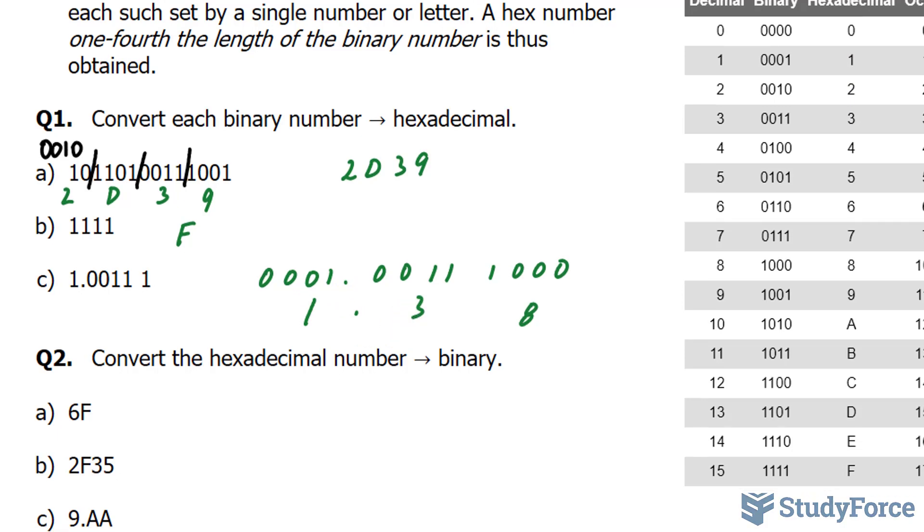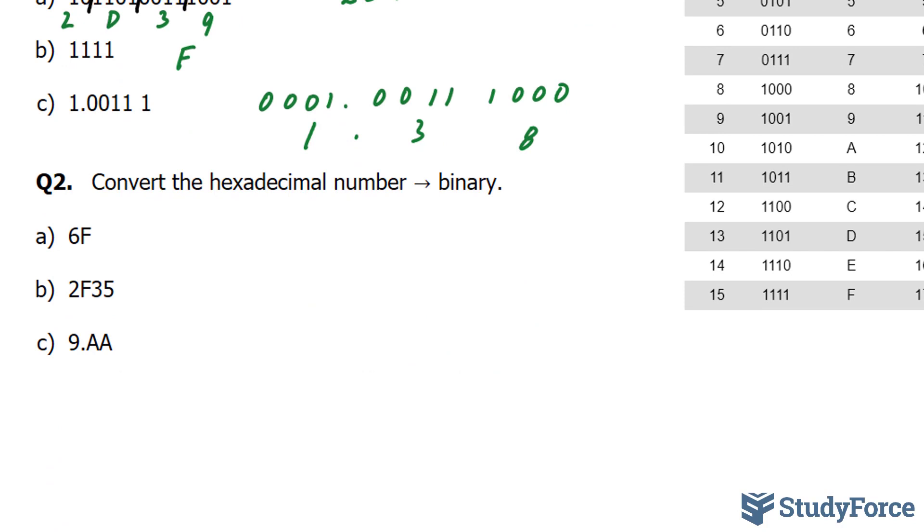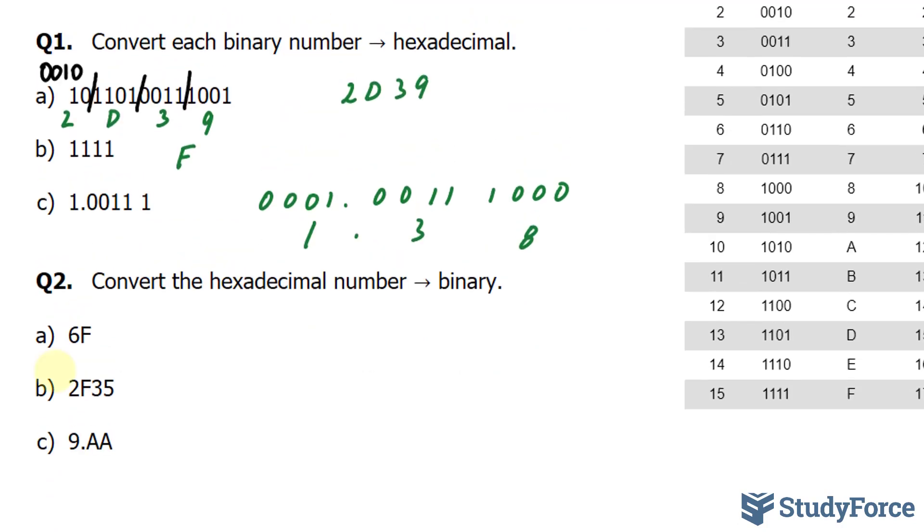In question 2, we're asked to convert the hexadecimal number into binary. Starting off with 6F. F is 1111.